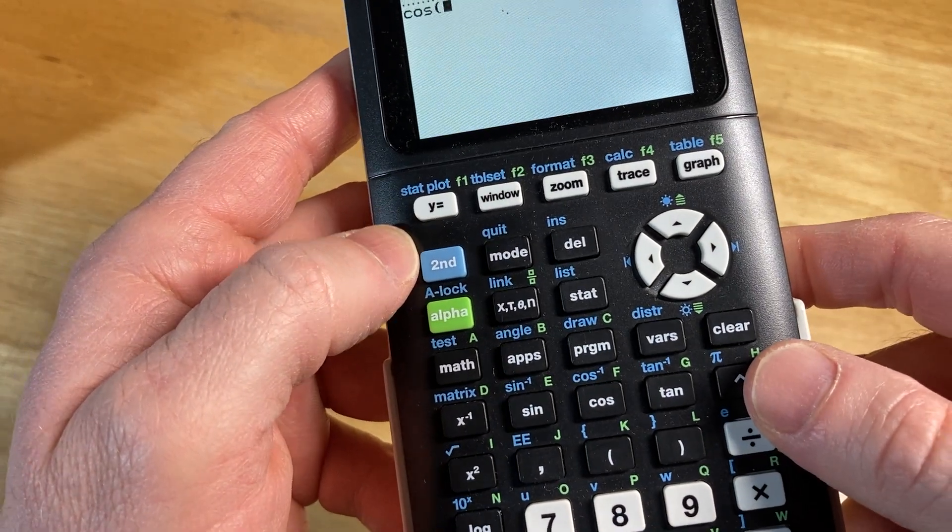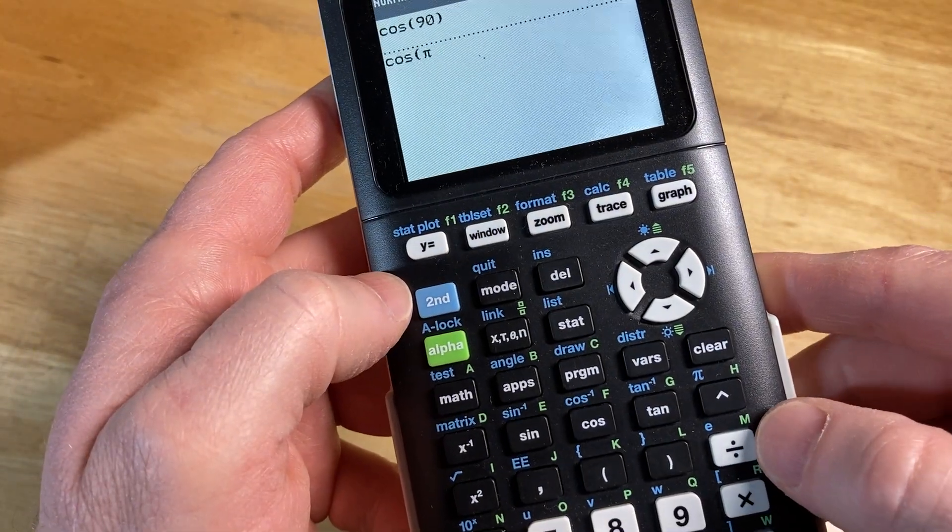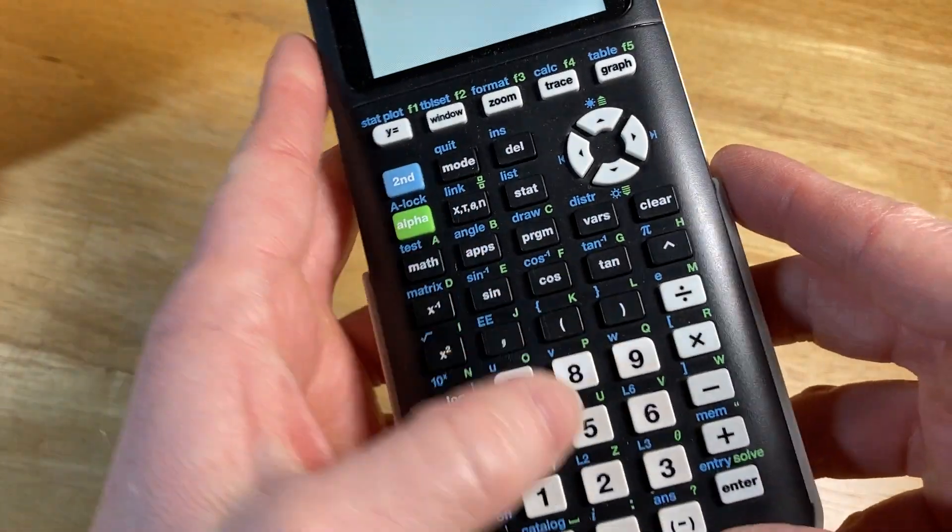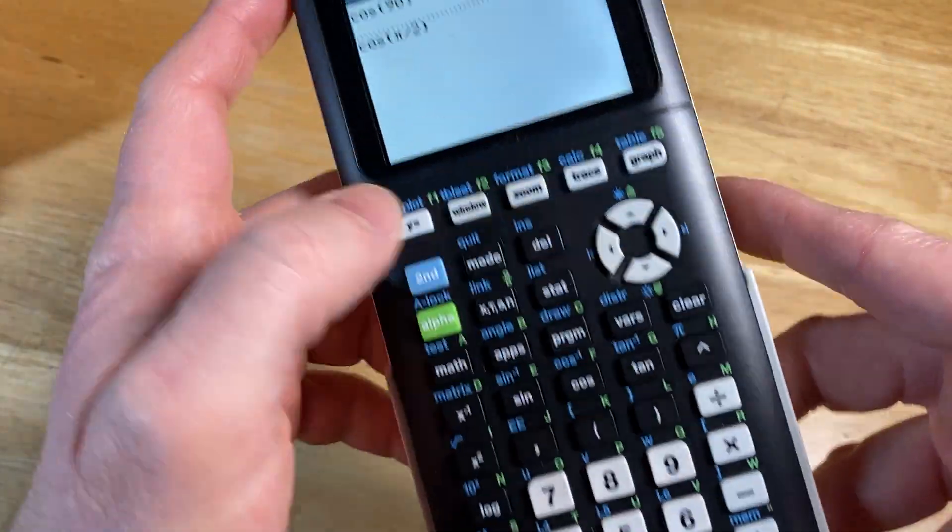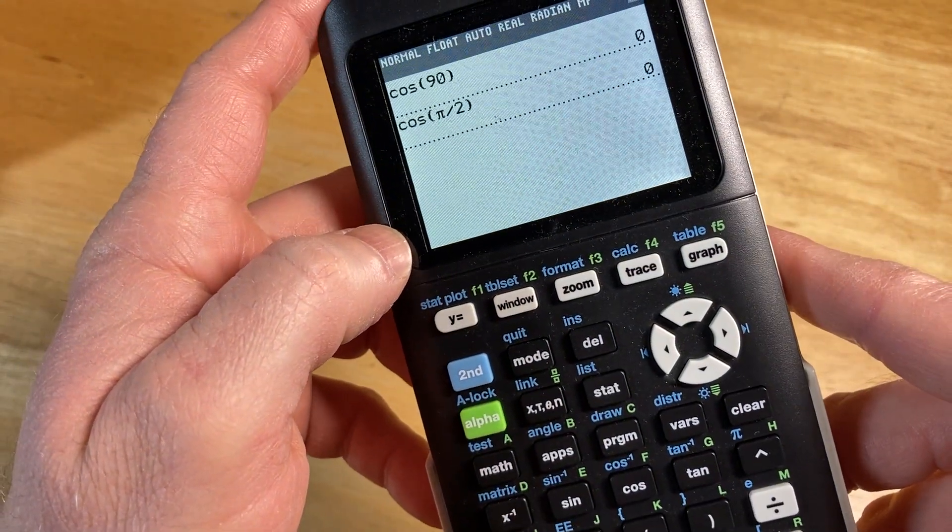Pi is a blue key, so you have to hit second first, and then the fraction key, so divided by, and then two, and then parentheses. Press enter, and we get the same answer both times.